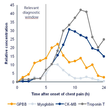In medicine, a biomarker can be a traceable substance that is introduced into an organism as a means to examine organ function or other aspects of health. For example, rubidium chloride is used as a radioactive isotope to evaluate perfusion of heart muscle.